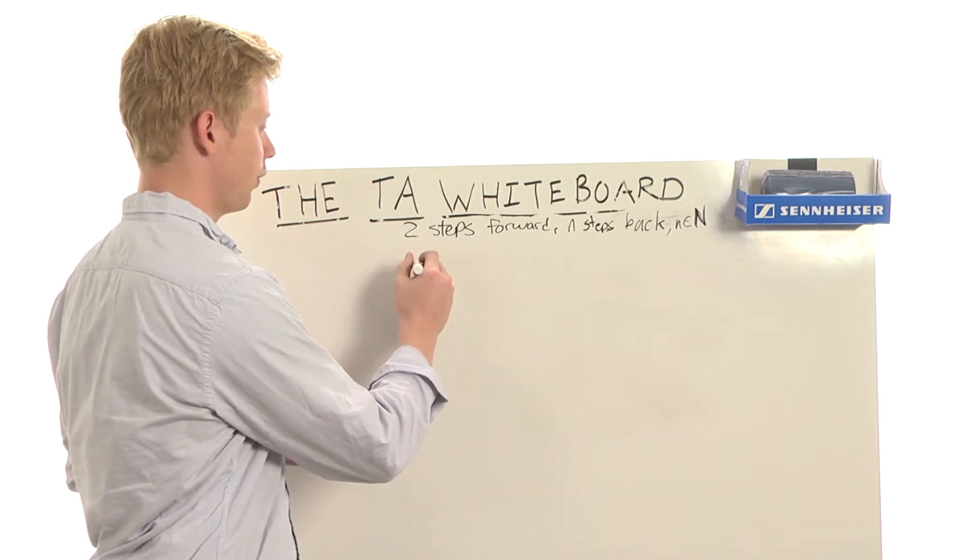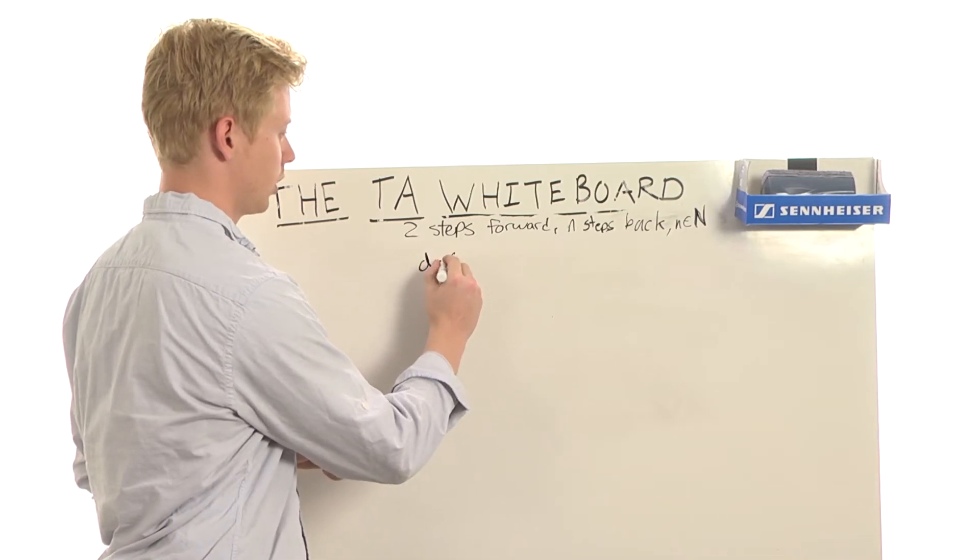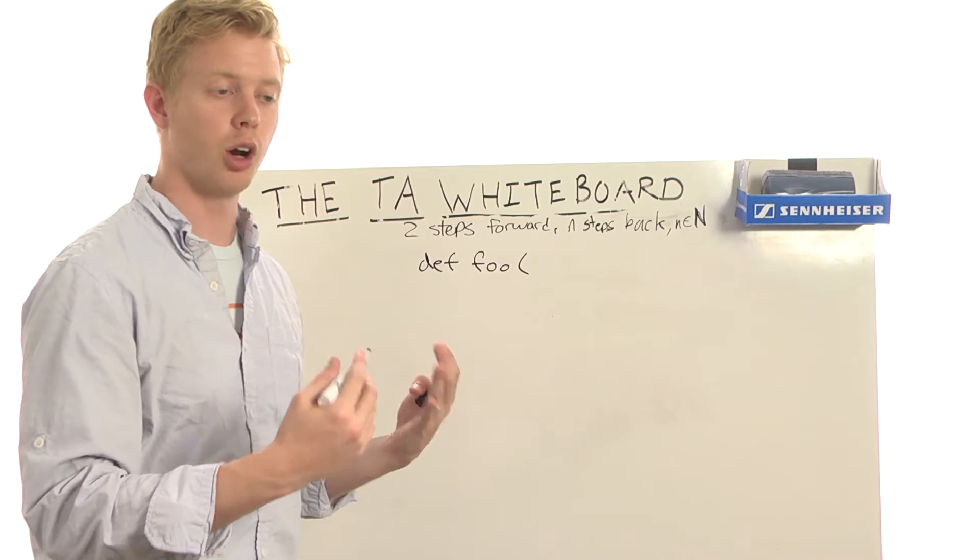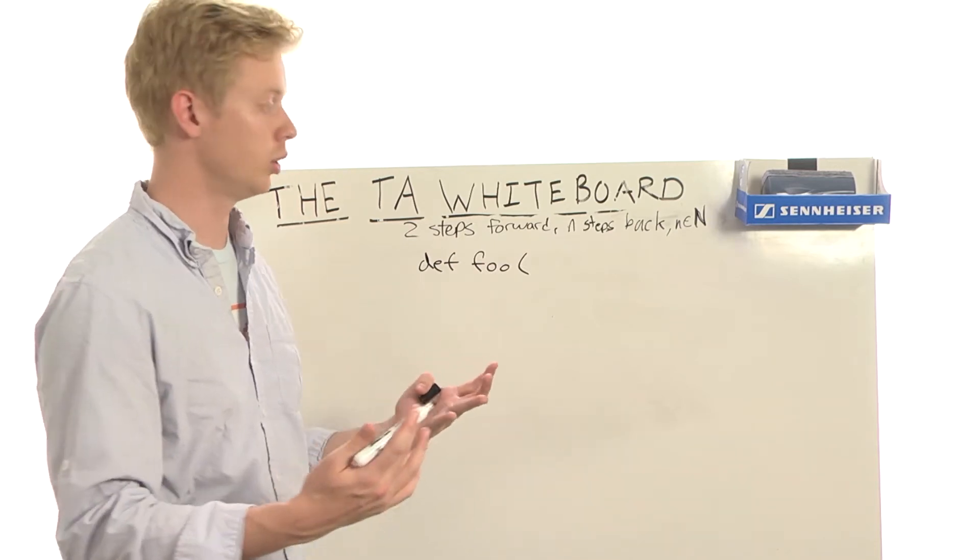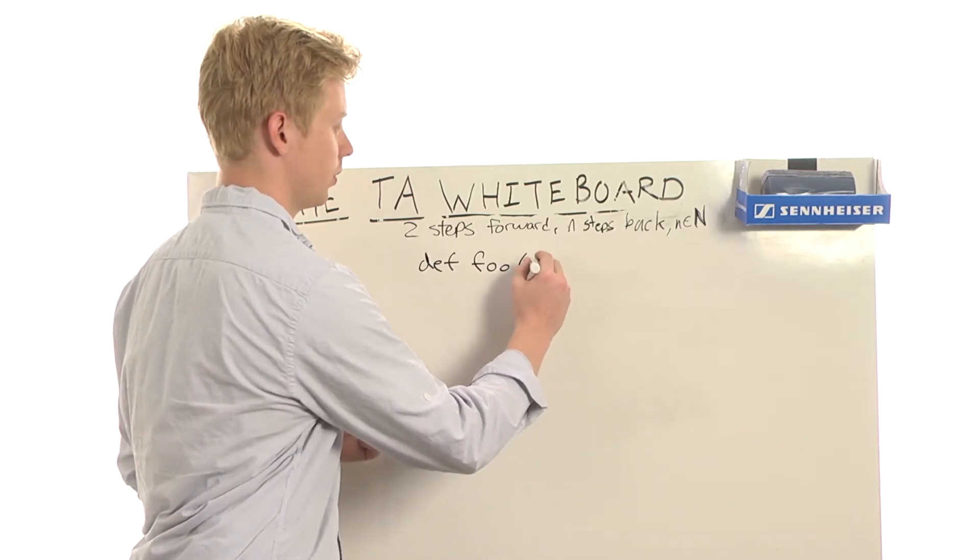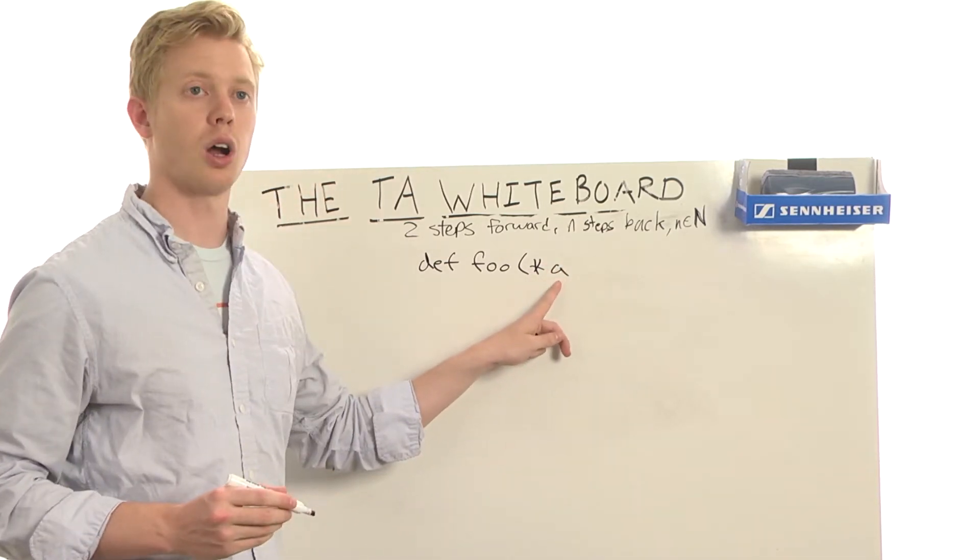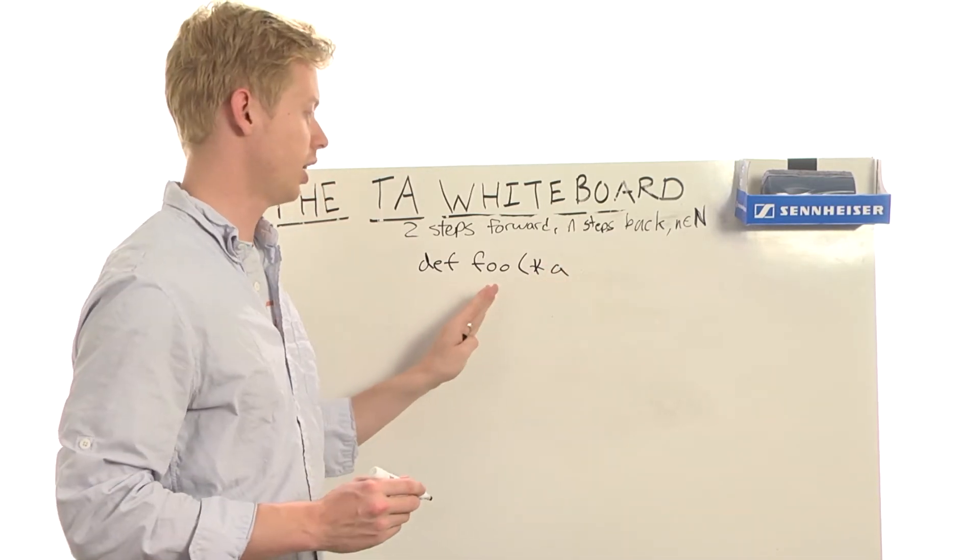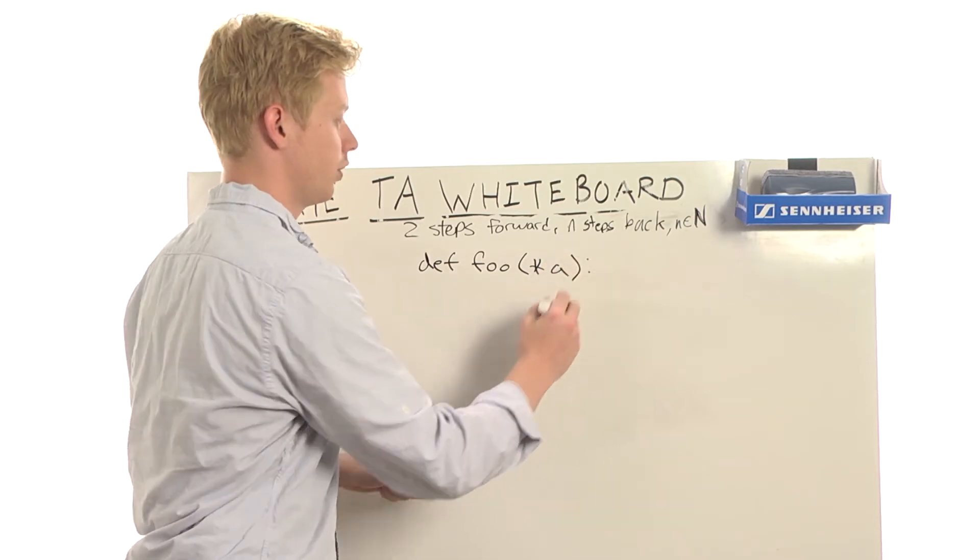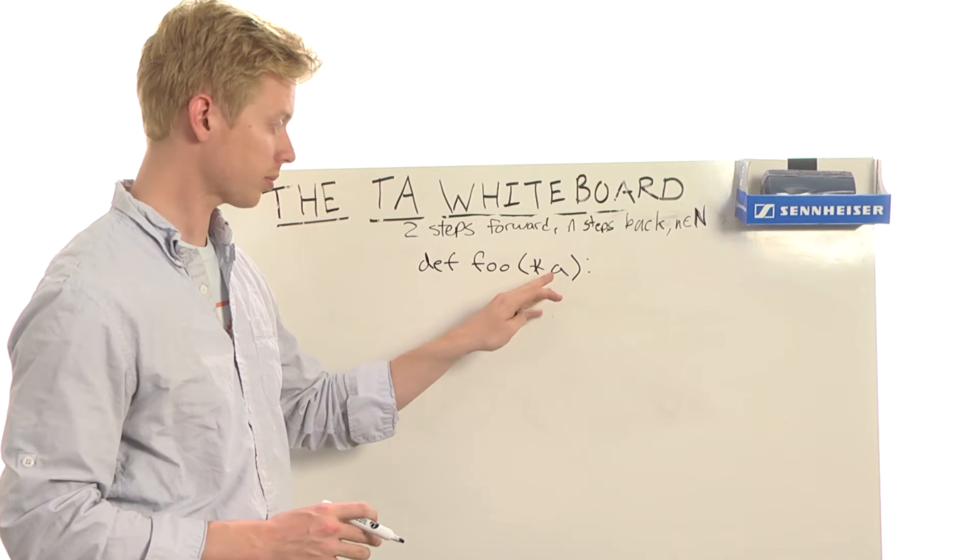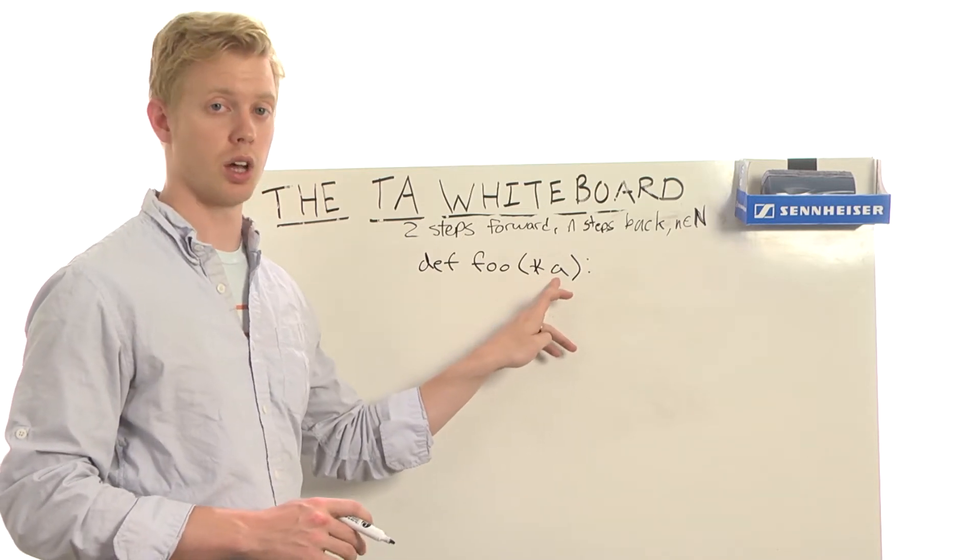So one of the things we can do when we have a function definition - we'll call this function foo - it can take a variable number of arguments. This is a handy thing you can do in Python. And the way you do this is you say star, and then you give it a variable name. Generally you say star a. And this basically says take all of the arguments passed into this function, all of the unnamed arguments, we'll come back to named arguments in a second, and store them in a tuple, and we'll call it a.